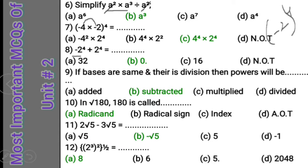Question 10: In square root of 180, what is 180 called? The 180 inside the radical sign is going to be called the radicand. The symbol itself is the radical sign, and since there is no index shown, it is understood to be 2. Whatever is inside the radical sign — whether a number or expression — that is called the radicand.